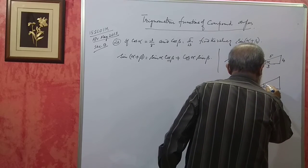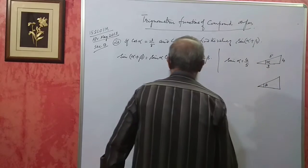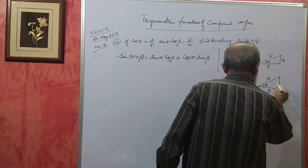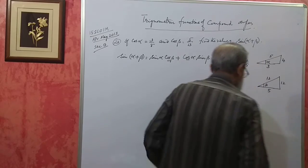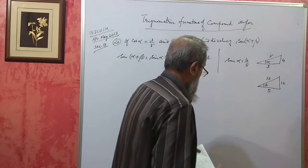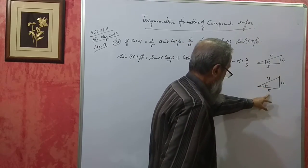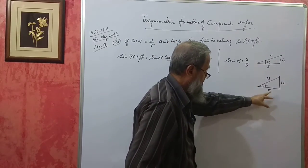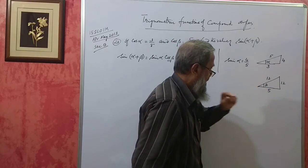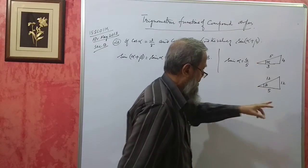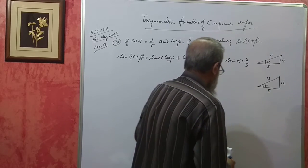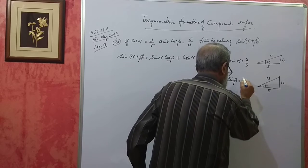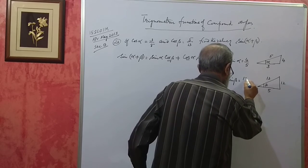For angle beta, cos β is 5/13. The opposite side will be 12, because 13² = 169, minus 5² = 25, gives 144, and root of 144 is 12. So sin β equals 12/13.